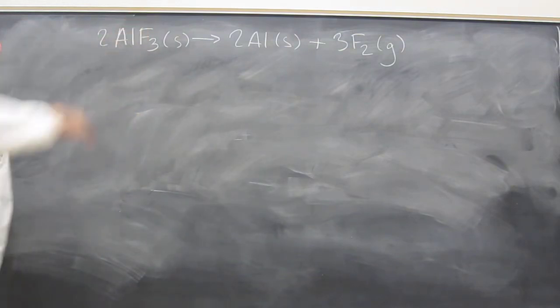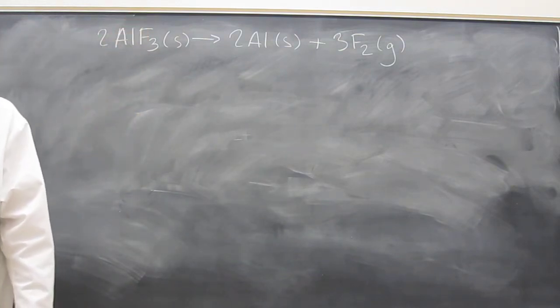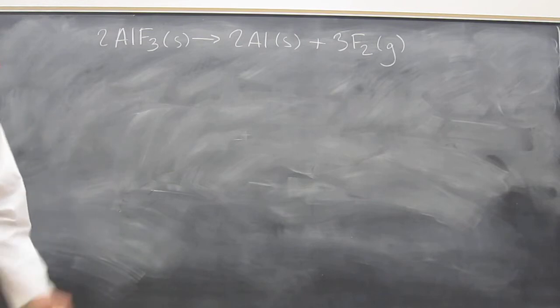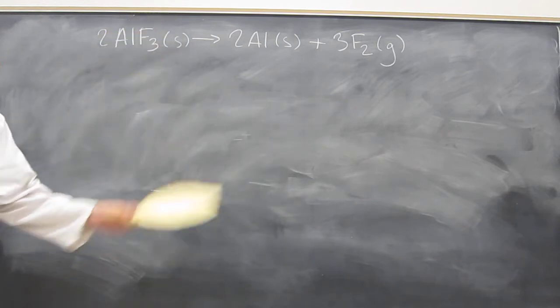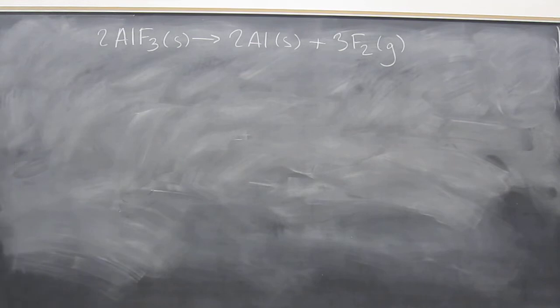Halogens, group sevens, are always negative—not always—fluorine is always negative one. Aluminum is always plus three. The oxidation number is the same thing as the charge effectively.